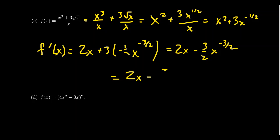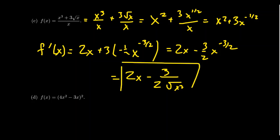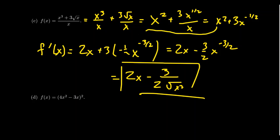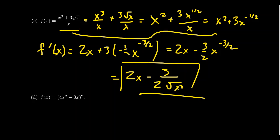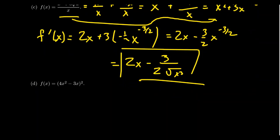You can rewrite that last term in different forms — like 2x minus 3 over 2x times the square root of x, or with the square root of x cubed. These are all cosmetic differences. What matters most is whether we can correctly perform the derivative calculation and also rewrite the original expression in a form appropriate for differentiation.